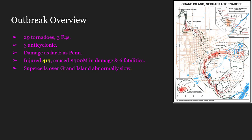Damage as far east as Pennsylvania occurred, as this storm system originated in Nebraska and, as storm systems do in the northern hemisphere, moved eastward. This event would injure 413 people across several states, most notably in Grand Island, Nebraska itself, and also across Michigan and Pennsylvania. This system caused $3 million in damage in 1980 US dollars and unfortunately caused 6 fatalities.